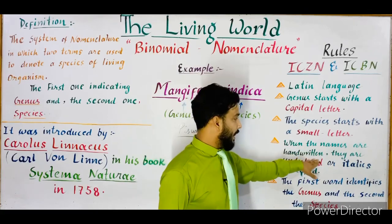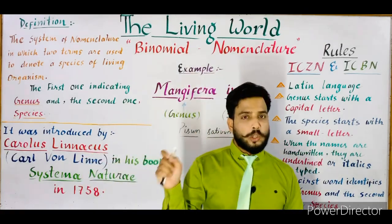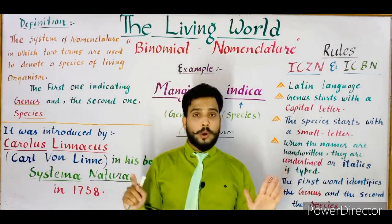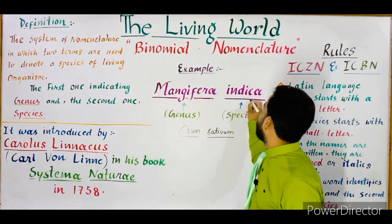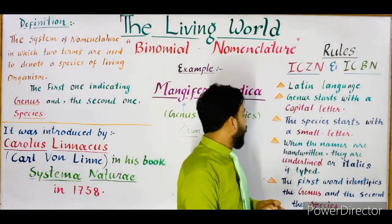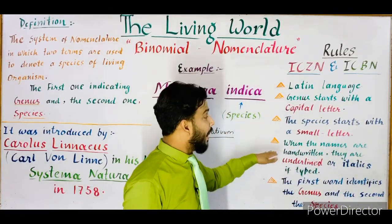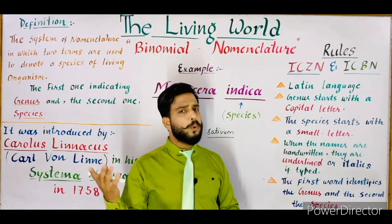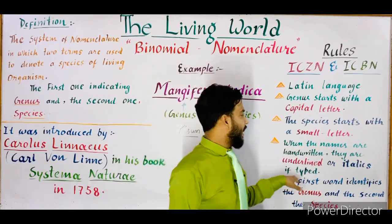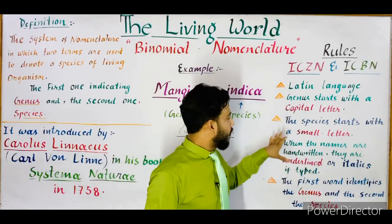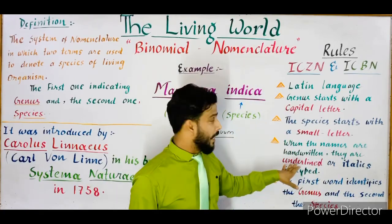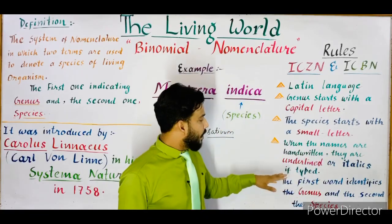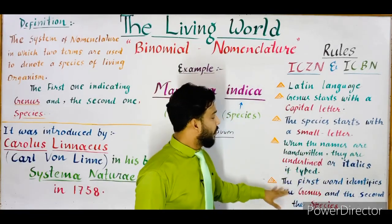The next rule is: when the names are handwritten — if you are writing the scientific name in your notebook by hand — then both names must be underlined separately, for example Mangifera indica. So when names are handwritten they must be underlined. But if typed, for example on a computer or mobile phone, then they must be written in italic font. So the rule is: handwritten names are underlined; typed names must be in italic font.